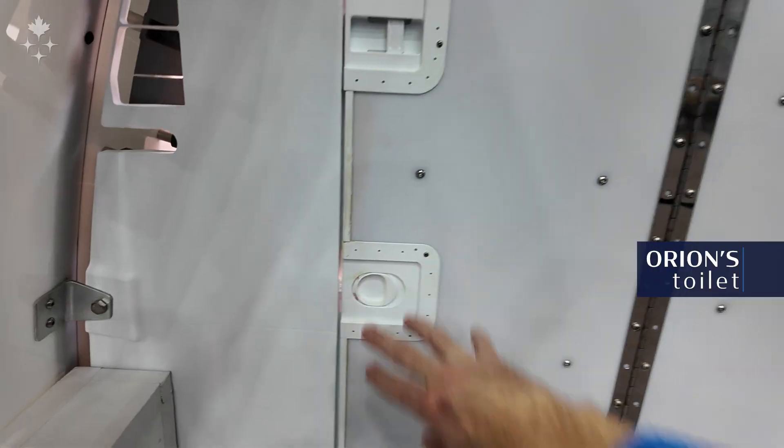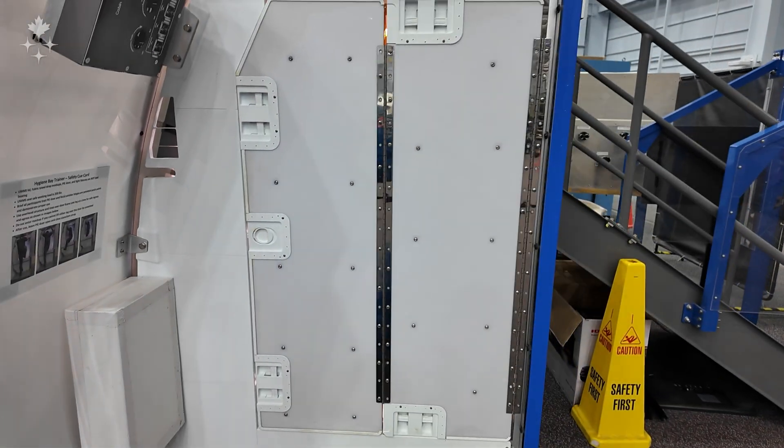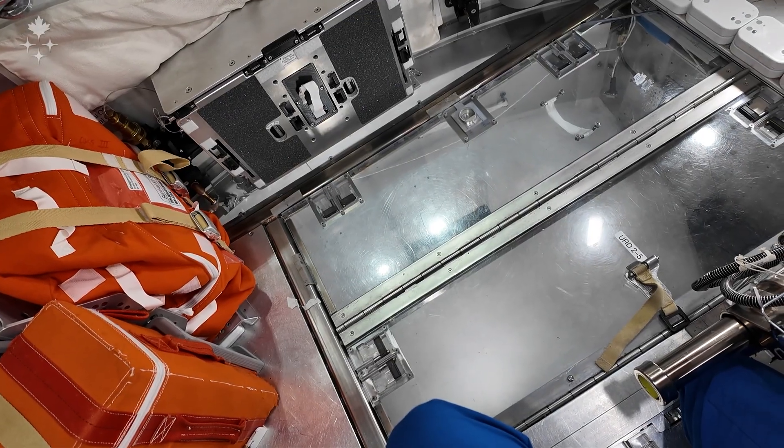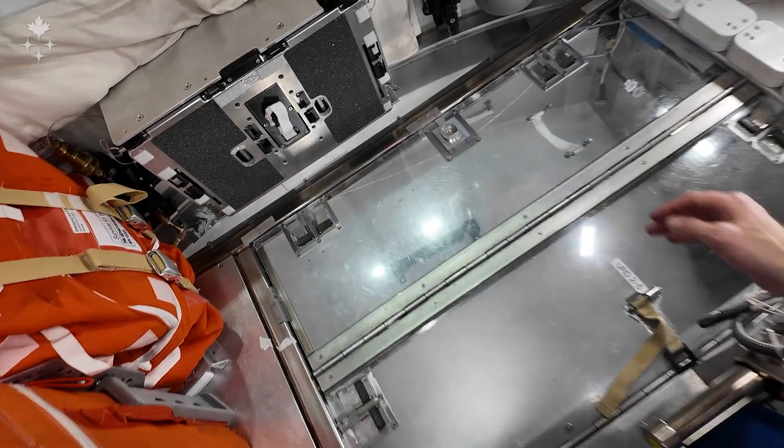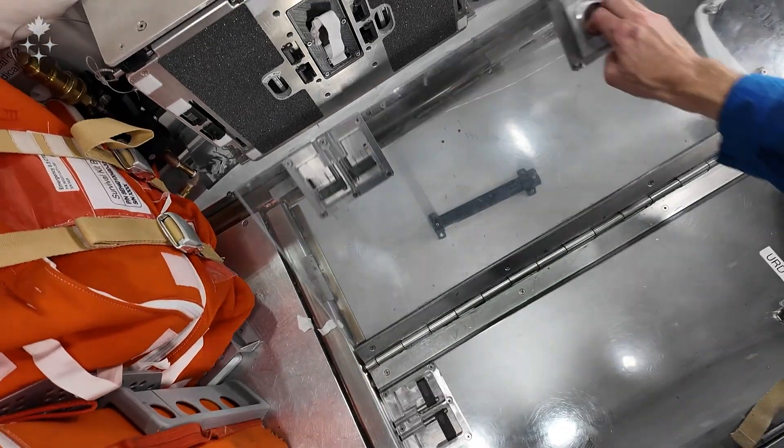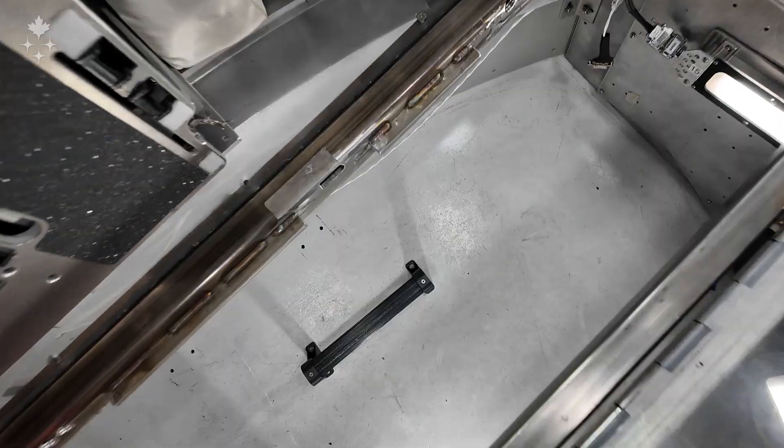If you were looking at the toilet from inside the capsule, this would be the floor. You would float over to it, open up this hinging door and float on in.